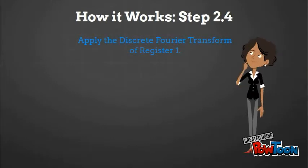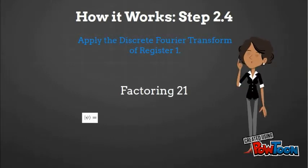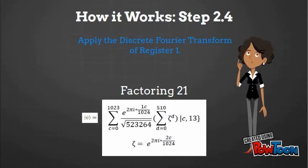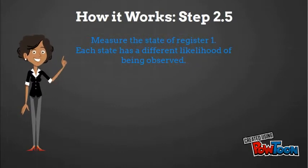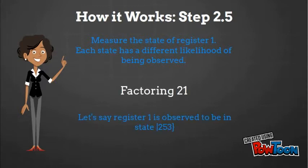She then applies the discrete Fourier transform to the first register. Next, she measures register 1 again. Due to the discrete Fourier transform, the observed probability of a state c is concentrated around values such that c over q is approximately equal to d over the period, where d is an integer. Jackie observes register 1 to be in the state 253.